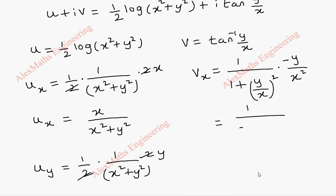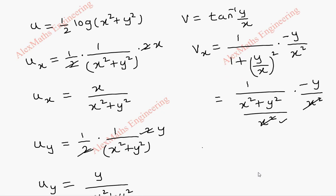1 by, when we take LCM, it is going to be x square plus y square by x square and this is minus y by x square. This x square will be carried to the numerator. Then, it gets cancelled. So, the final term remaining is v_x is minus y by x square plus y square.